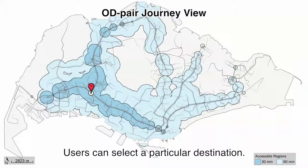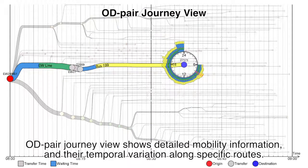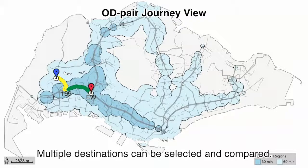Users can select a particular destination. The OD pair journey view shows detailed mobility information and their temporal variation along specific routes. Multiple destinations can be selected and compared.